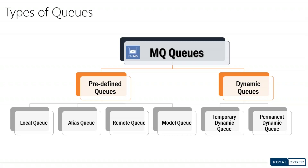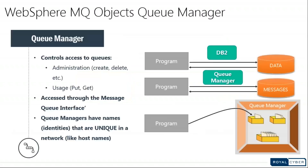We also have a remote queue: if you want to transmit messages from one queue manager to another, you put the message in the remote queue and it will automatically forward the message to the transmit queue to be transmitted. Similarly, the model queue can be either temporary dynamic or permanent dynamic — for example, when you need an acknowledgement back from an application.